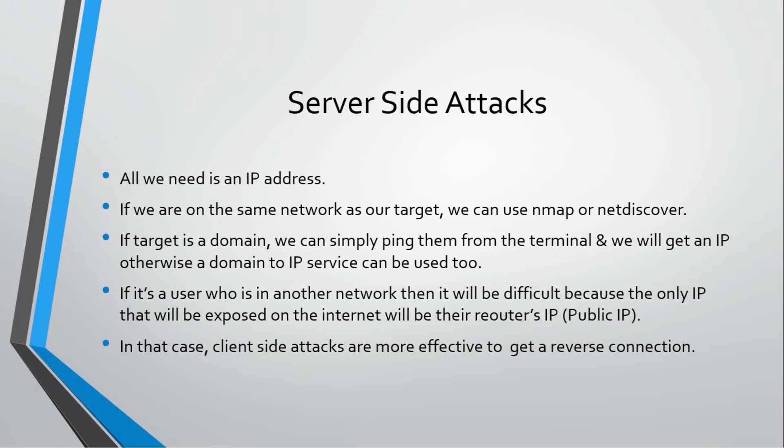If our target is not on our network — if our target is connected to another network — that means they are not exposed on the internet, which means they do not have a public IP. So even if we try to hack them or ping them, we cannot ping them because their IP is not exposed on the internet. There are two kinds of IPs: one is called public IP and the other is called private IP.